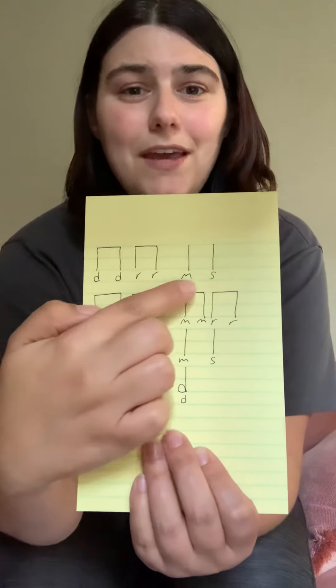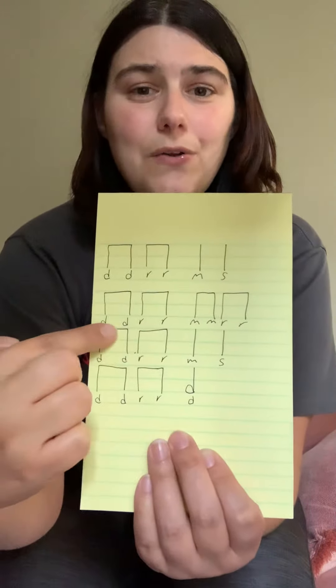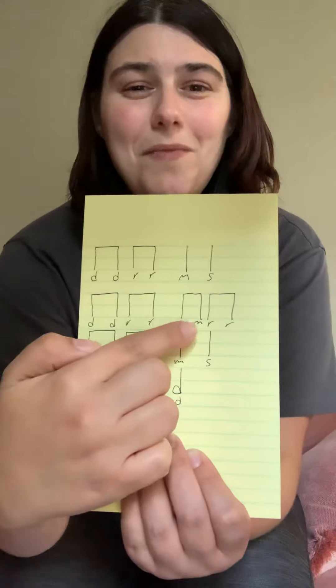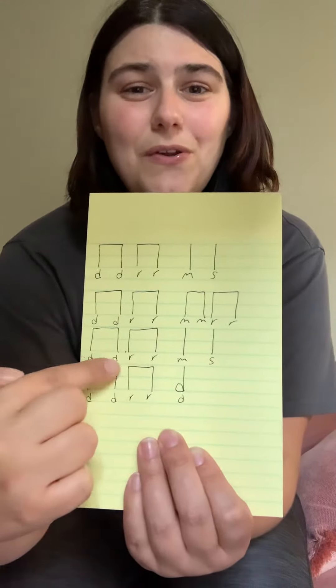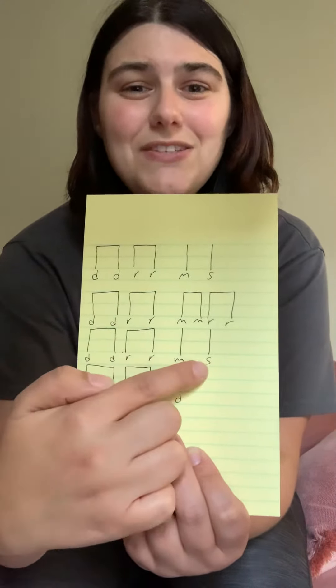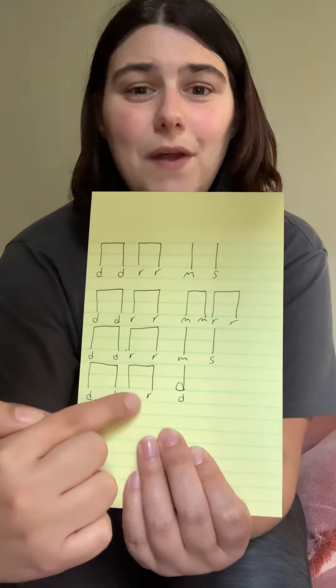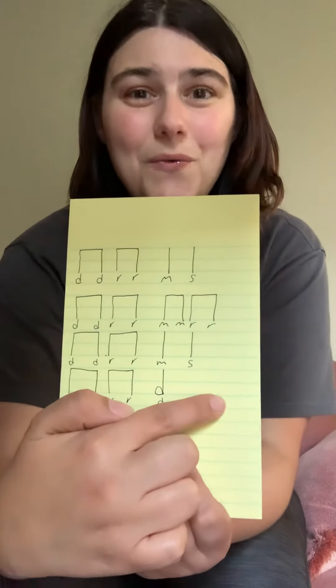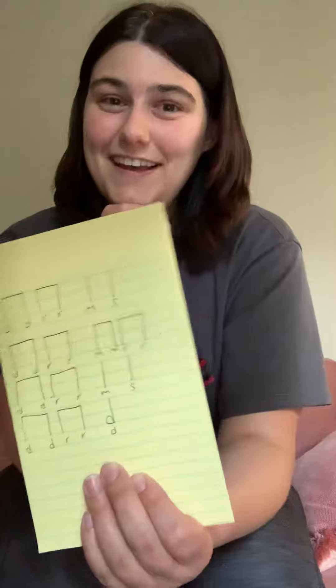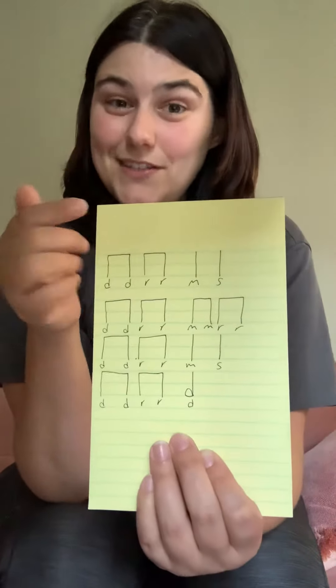Do do re re mi sol do do re re mi mi re re do. Do do re re mi sol do do re re do re mi sol. Okay, did you nail it? If not, practice it, because this is going to be what it's going to be like to be a balladeer, it's going to be what it's going to be like to be a musician.